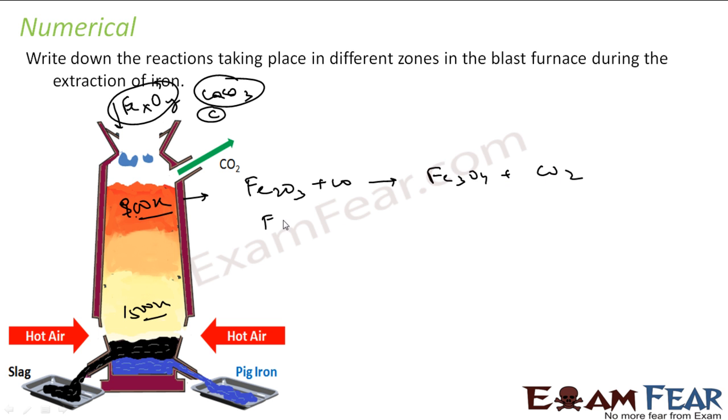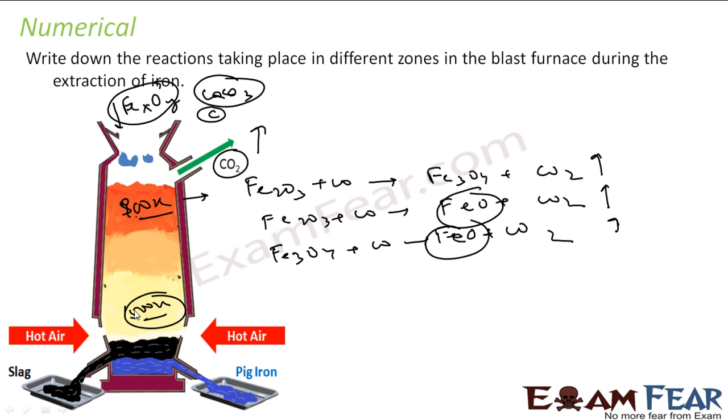The same Fe3O4 in the ore reacts with carbon monoxide to give FeO and CO2. After these reactions, what you have is only FeO because CO2 is emitted out.